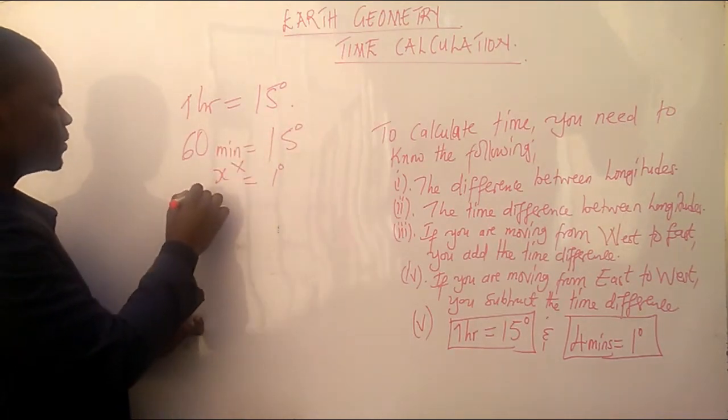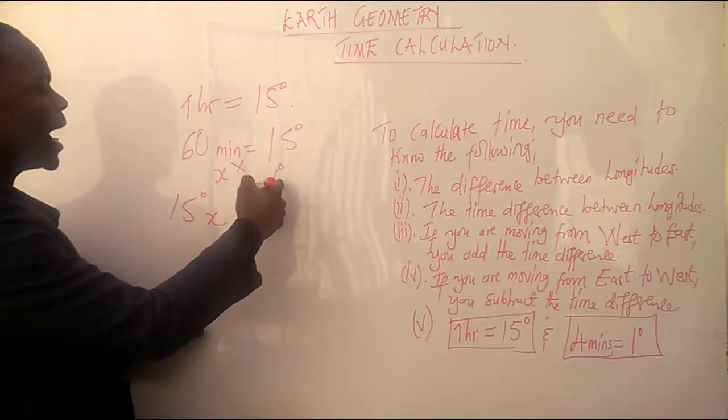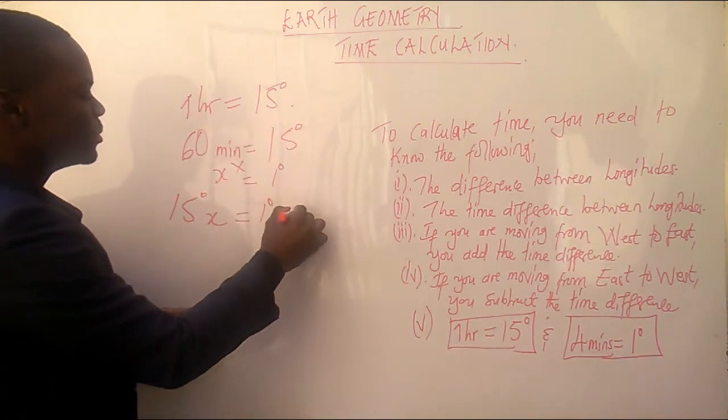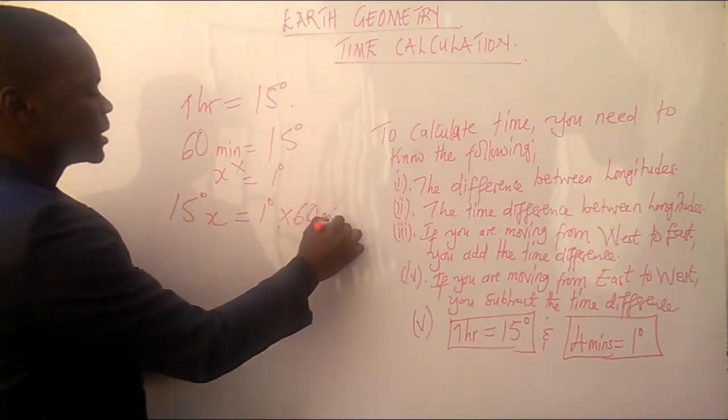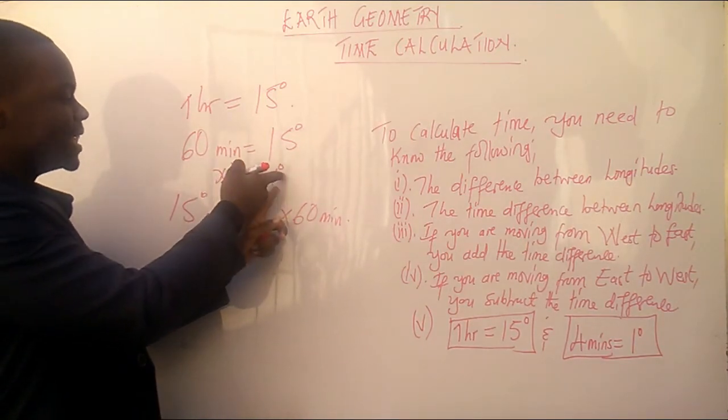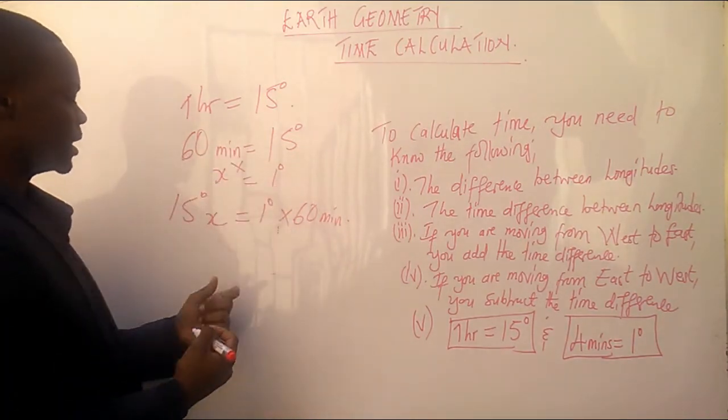x times 15 degrees equals 1 degree times 60 minutes. So, here I should say 1 degree times 60 minutes. Okay. Which is this.